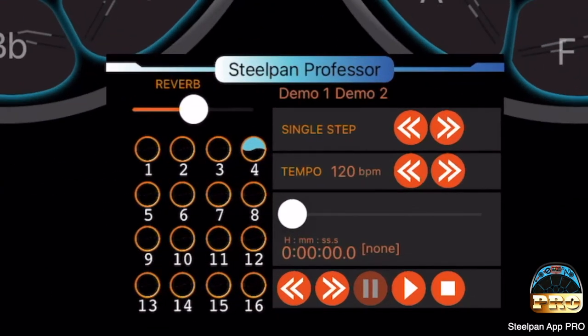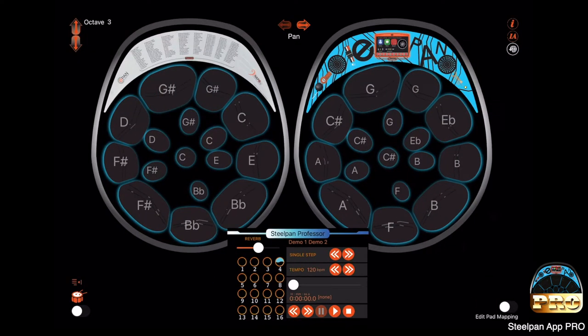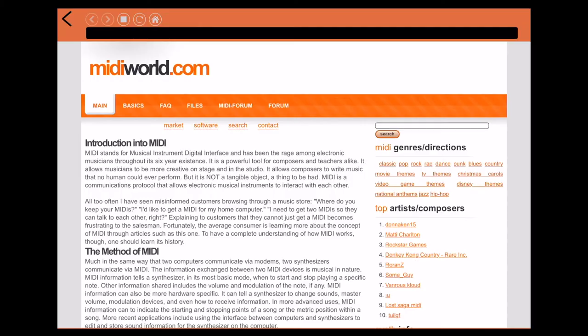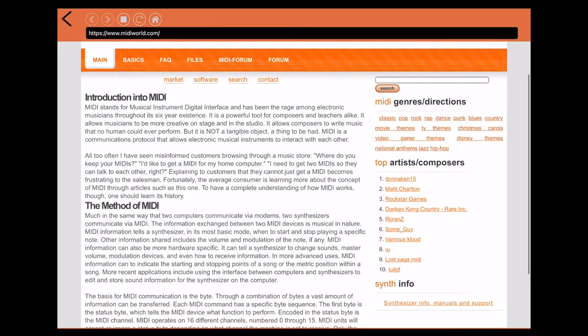Once you have acquired the SteelPan professor, the history making arrangements from Duvon Stort come free. It allows you to use any MIDI file available on the web to learn to play any song available.